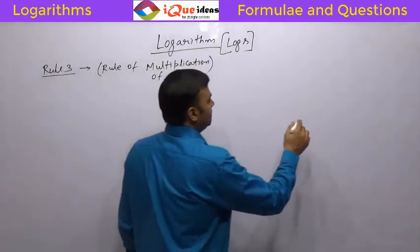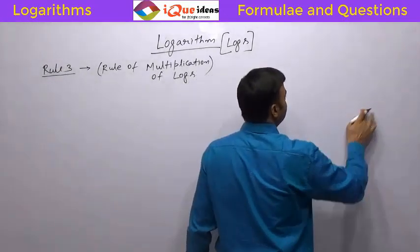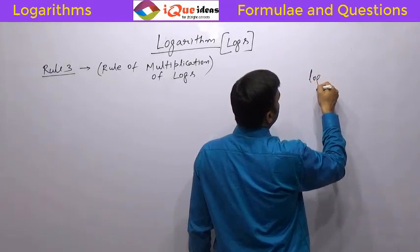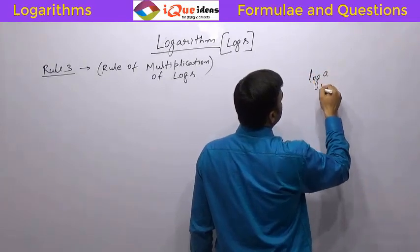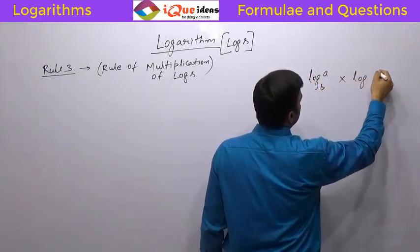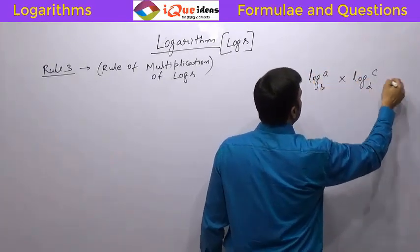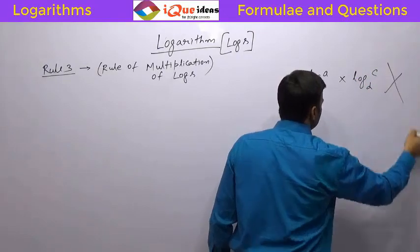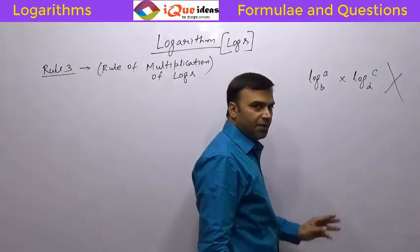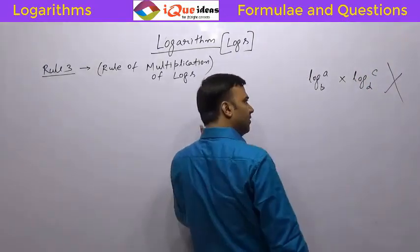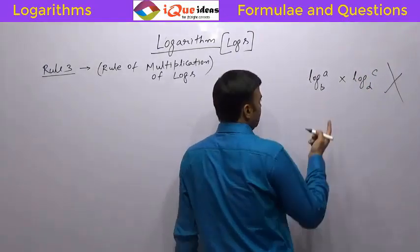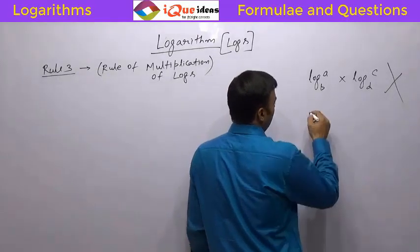Let us see with an example. Can you say anything about log of A to the base B, multiplied by log of C to the base D? No — there is no rule for this. I am giving you all the different possible situations, then we will go back to the rule. This first one has no rule.